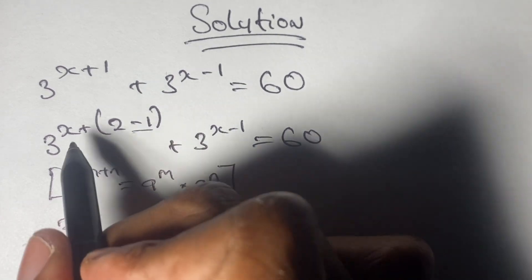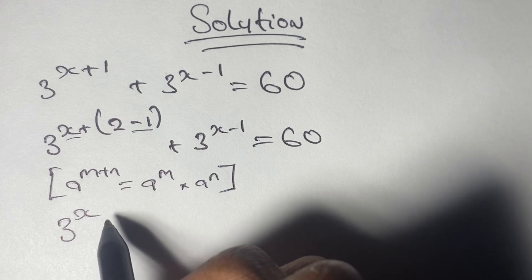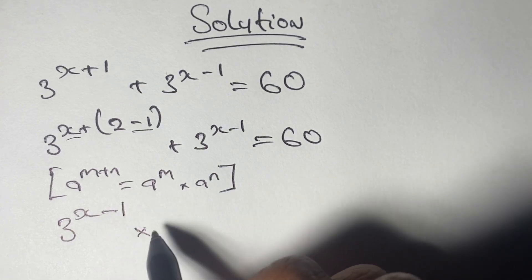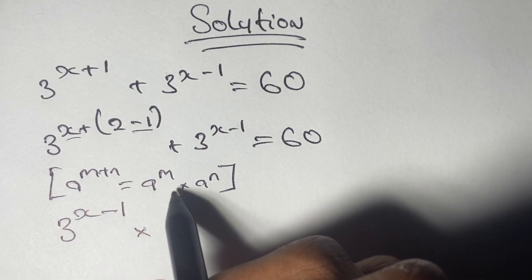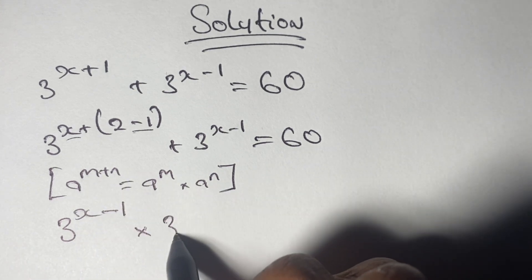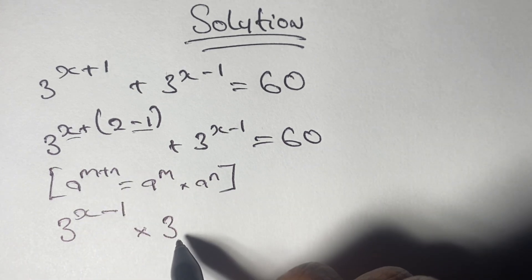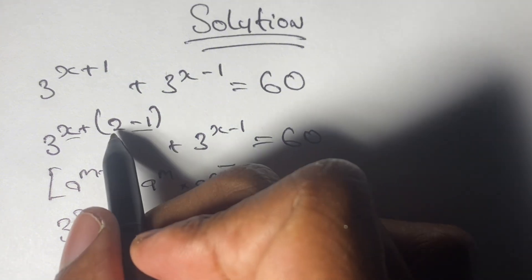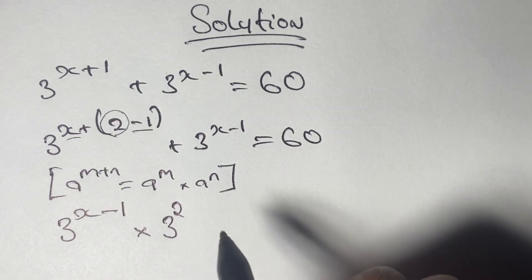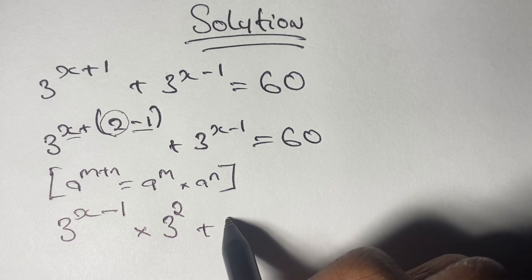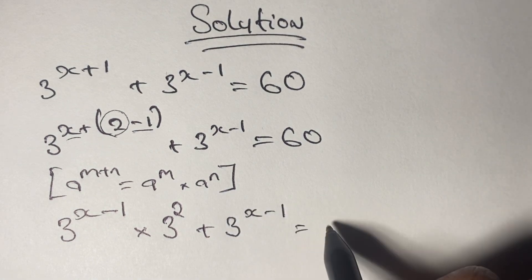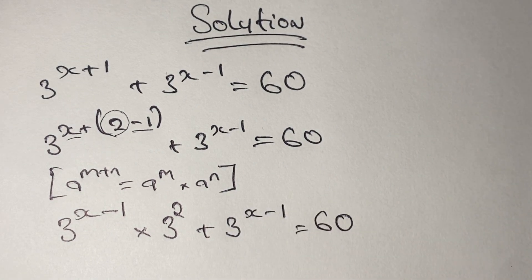With the understanding of this rule, we can write our equation as follows. We'll have 3 to the power of x, keeping the negative one, and applying our law, we would have times 3 to the power of 2, since a to the power of m plus n is the same as a to the power of m times a to the power of n. Same base, we just rewrite it and split the powers. So we have 3 to the power of x times 3 to the power of 2, plus 3 to the power of x minus 1, equal to 60.